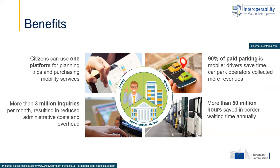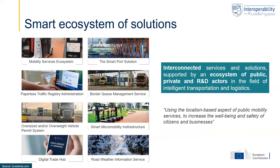These benefits all show how location data and technologies, by supporting many different types of services, can provide huge benefits to citizens, businesses, and government itself. An important element of Estonia's set of services is that it is really about a smart ecosystem of solutions — strongly integrated and linked to each other — involving many different public, private, and research actors in intelligent transport and logistics, all working together to optimally use location data and technologies for improving mobility services and realizing benefits to citizens, businesses, and society as a whole.